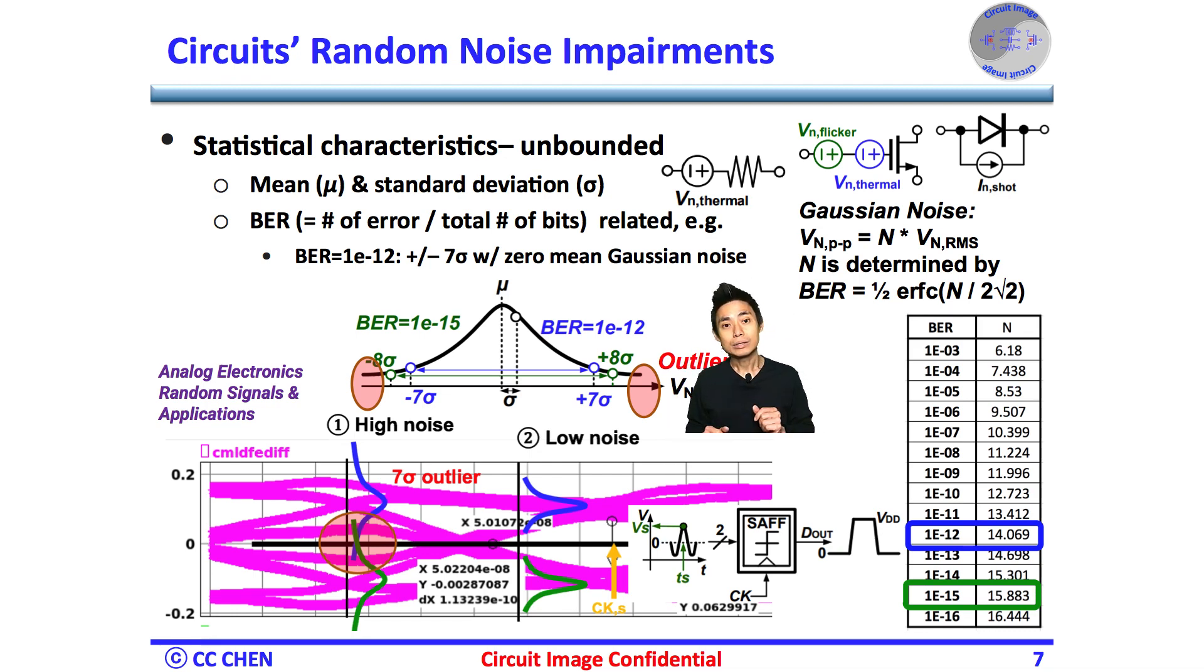The larger peak noise amplitude occurs at the longer waiting time, or a larger number of samples in the Gaussian distribution. Therefore, the sigma value is related to the BER requirement.